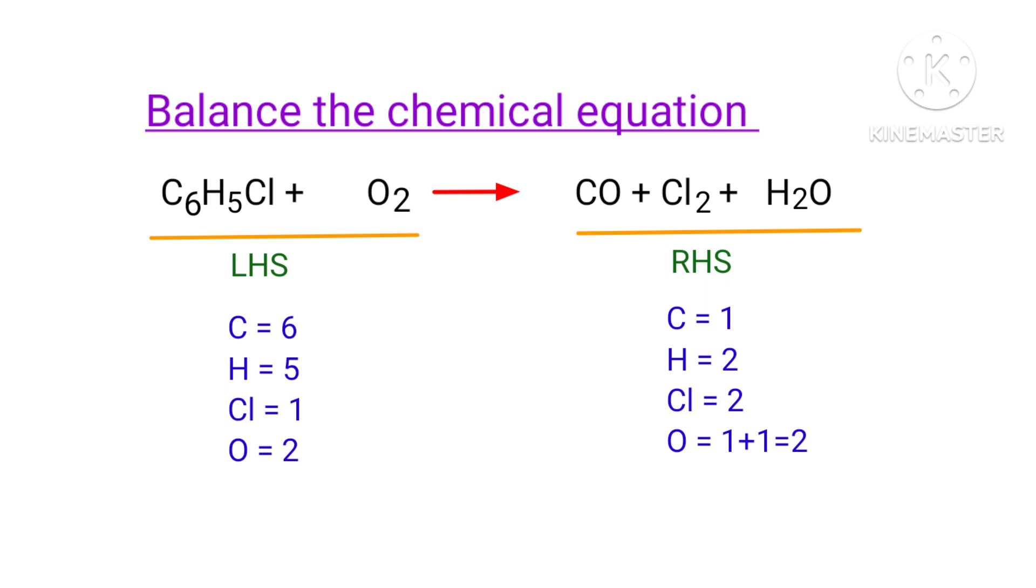In this equation, we need to balance the hydrogen atoms first by making it 10 hydrogen atoms on both sides. To do this, we need to put a coefficient of 2 in front of C6H5Cl and a coefficient of 5 in front of H2O.